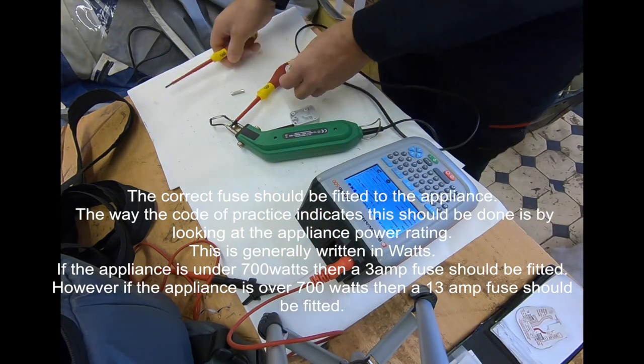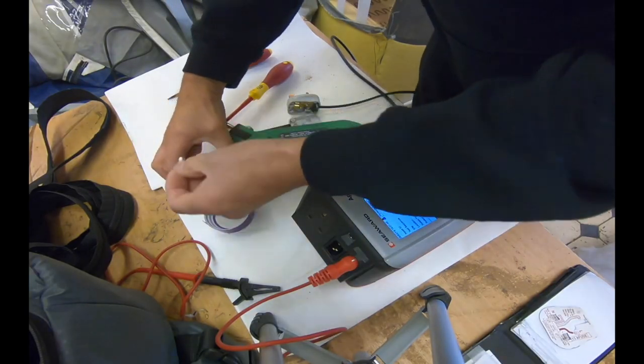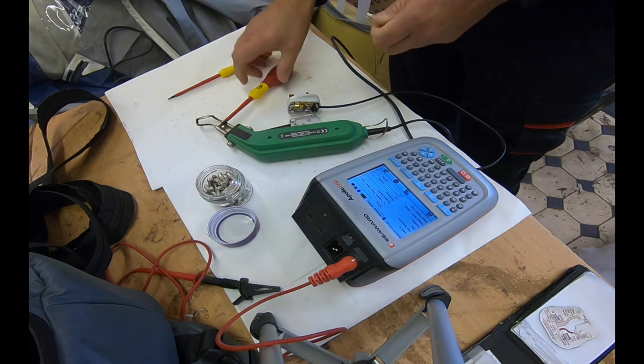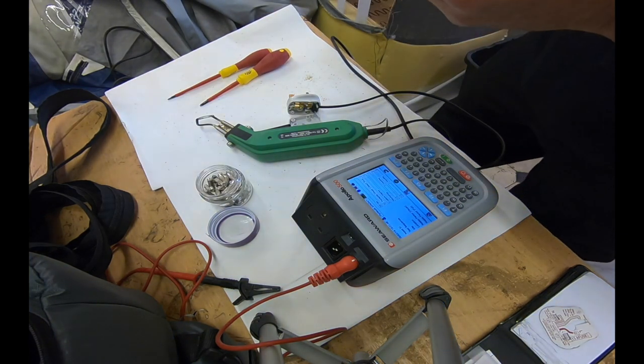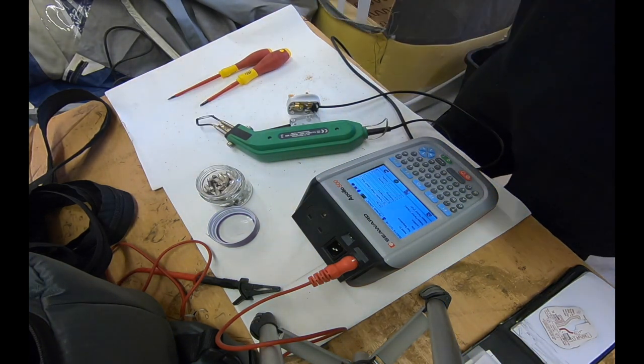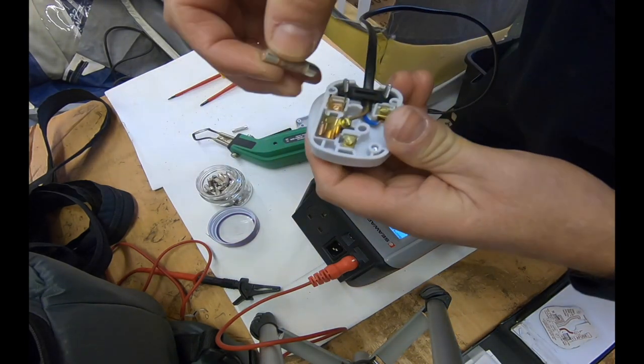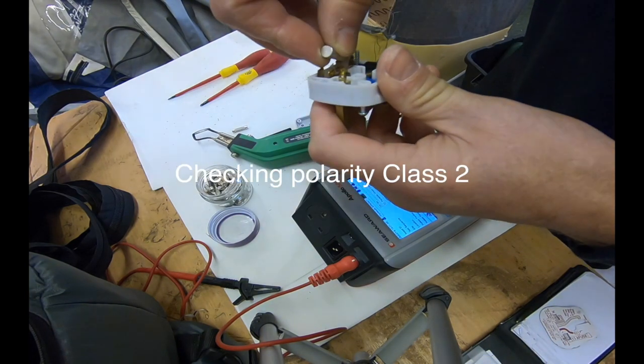That one in there, is it? Yeah, 3 amp. 60 watt is not even an amp, so 700 watt is 3 amp. So if we stick a little 3 amp one in, that takes you to 700 watt, you're only 60 watt. Oh yeah, it's not on permanent, it's only when you pull the trigger. Got ya.